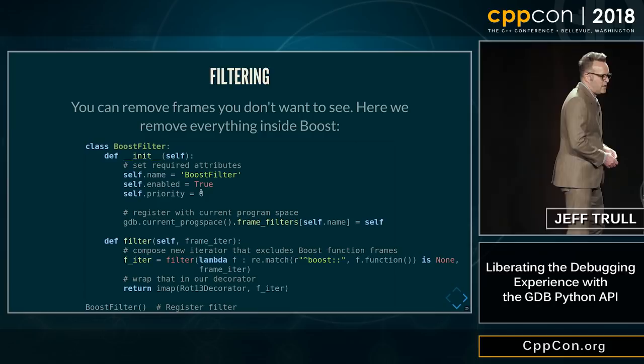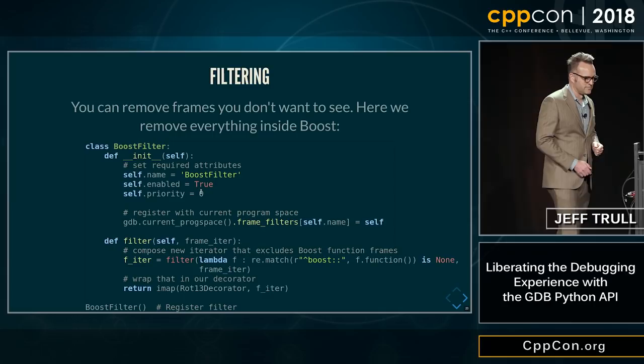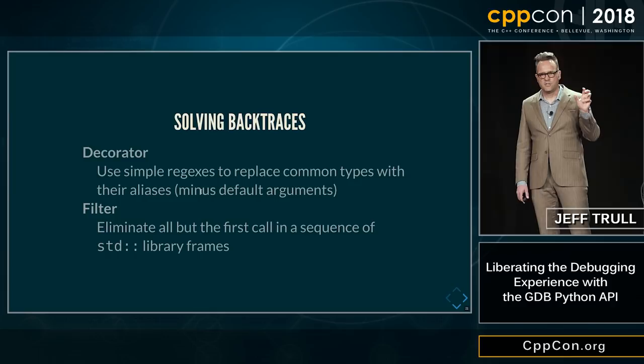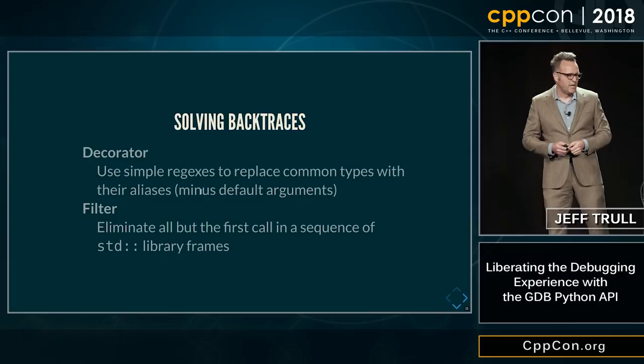Frame filtering: you can remove frames that you don't want to see. For example, if anyone didn't want to see anything from boost in their backtraces, this code would work. To solve the original problem, we're going to build a decorator that uses regexes to simplify the complex expanded types in the backtrace to make a more concise function name. We're also going to use the filter to eliminate everything except the original call to the standard library.